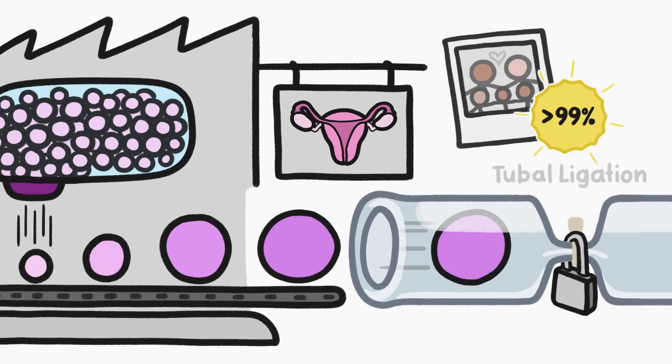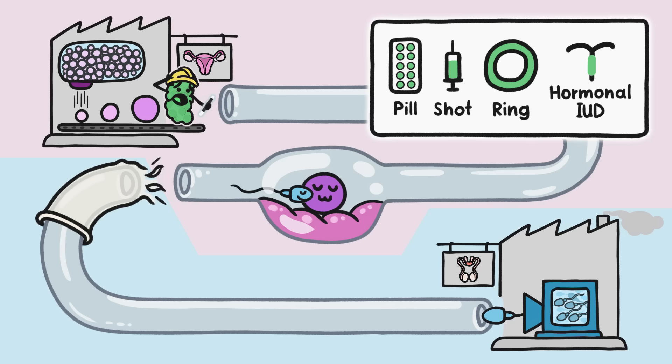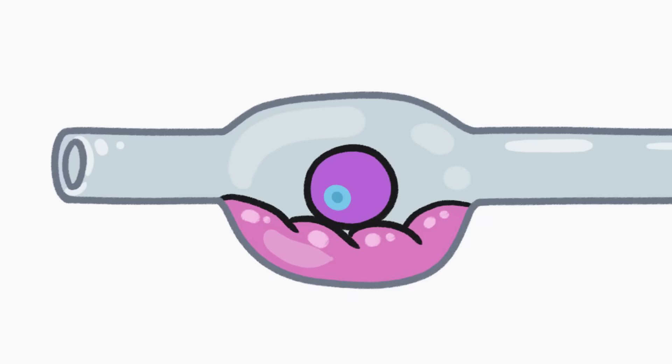If, despite one or more of these efforts, egg and sperm do manage to meet up and fertilization occurs, a few of the forms of hormonal birth control we've talked about, including pills, shots, rings, and hormonal IUDs, have one additional way to disrupt the process.